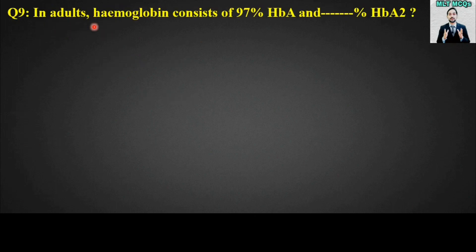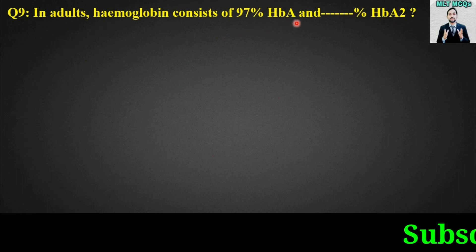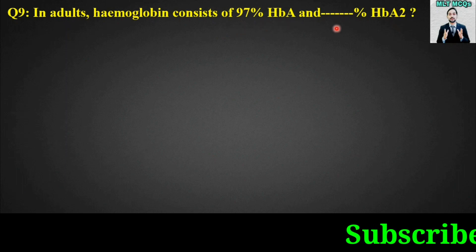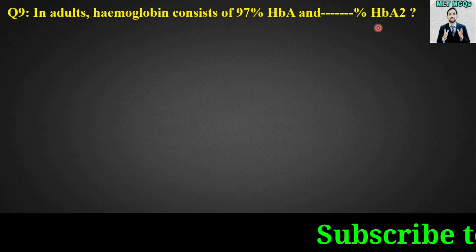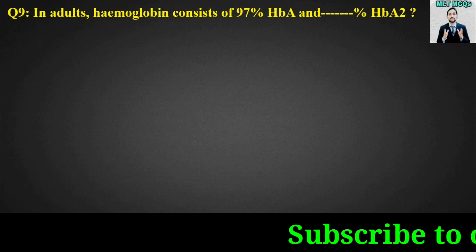MCQ number nine: In adults, hemoglobin consists of 97% HbA and blank percent of HbA2.